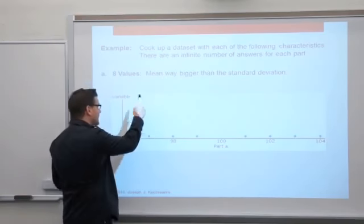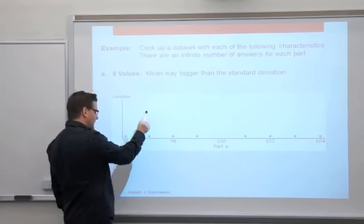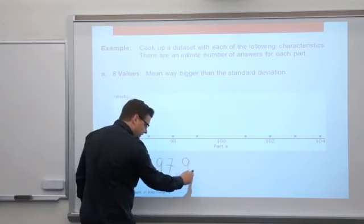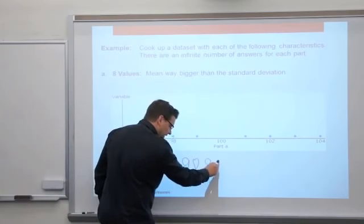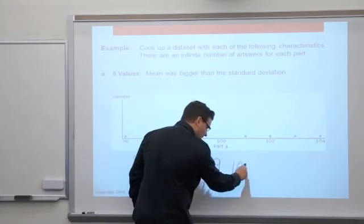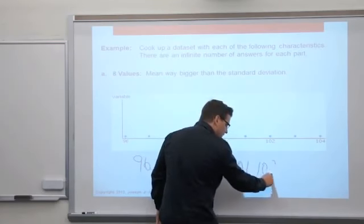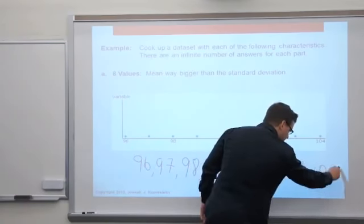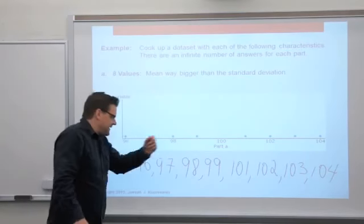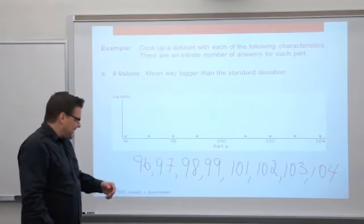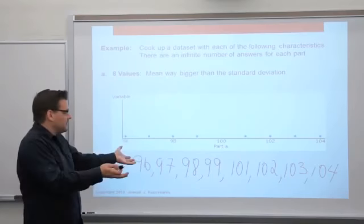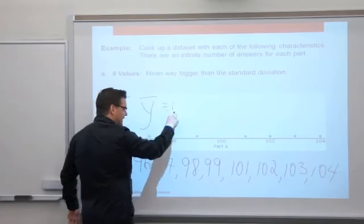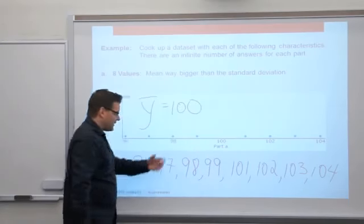Let me write the data set out as numbers. I've got a 96, 97, 98, 99 — I skipped 100 — and then 101, 102, 103, 104. If you need to use the calculator to figure out that mean, no problem — it's 100. I sort of balanced it, centered it around 100. So for this data set, Y-bar is 100.